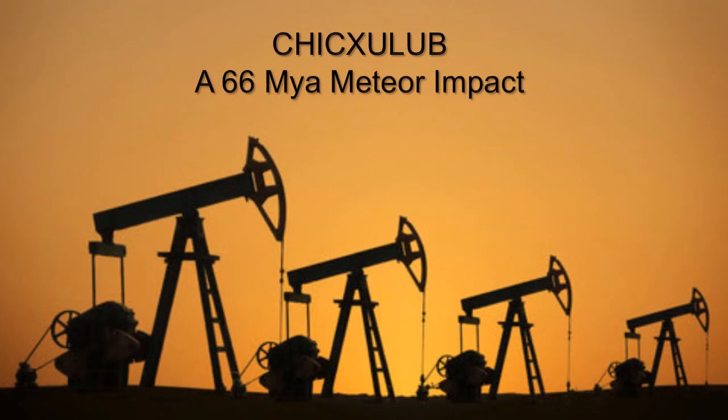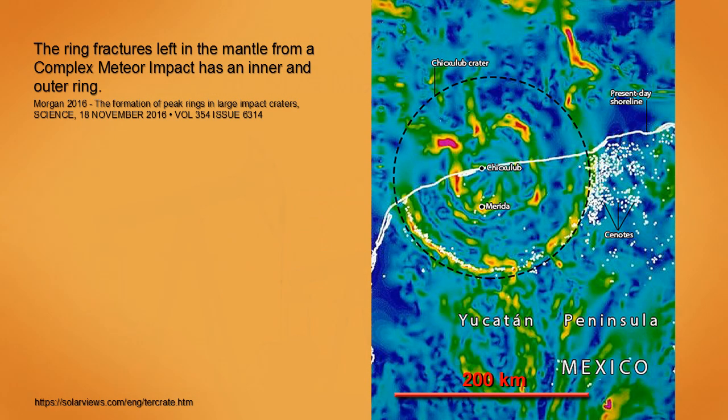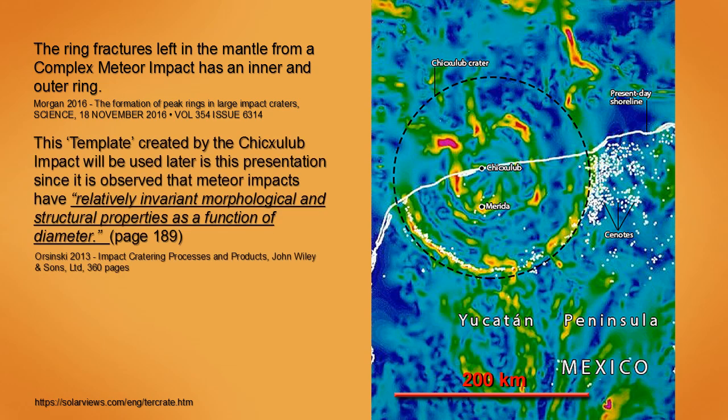One of the better examples is the 66 million year ago meteor impact known as Chicxulub on the Yucatan Peninsula of Mexico. The Chicxulub impact has both an inner and an outer ring structure, therefore being a complex meteor impact. The fact that the Chicxulub type of meteor impact has relatively invariant morphological and structural properties as a function of diameter will be used later on in this presentation.